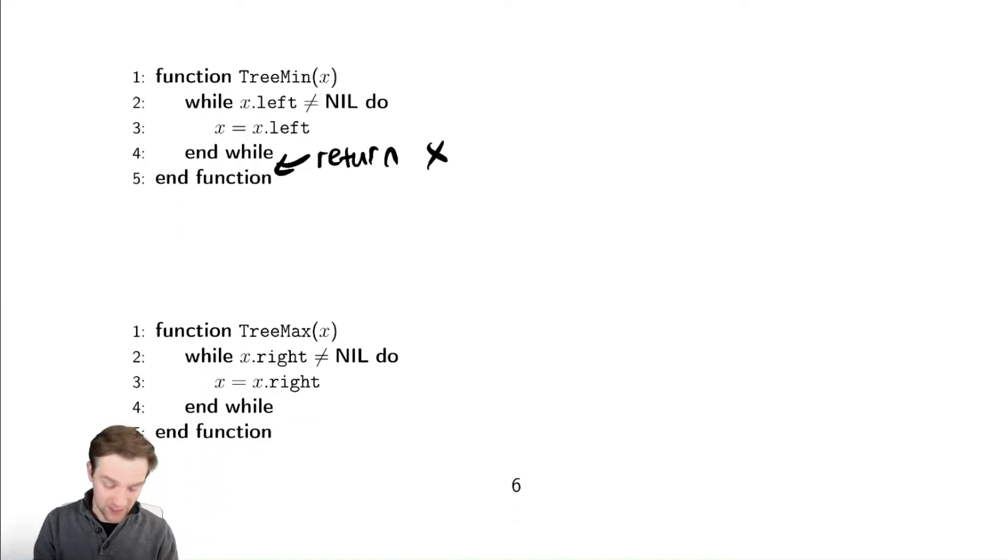Tree maximum is the exact same thing, presumably with the exact same typo. You bet it's not there. So return x as well. That is how we can find the minimum maximum value.